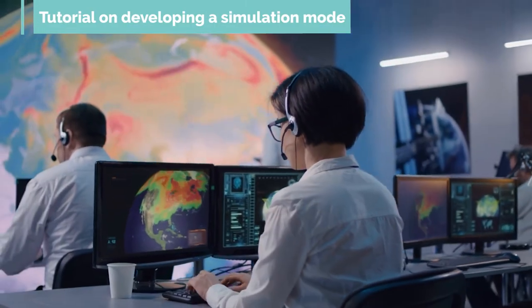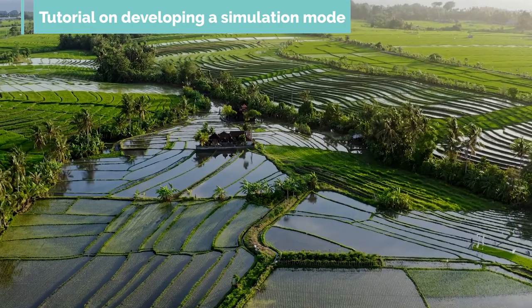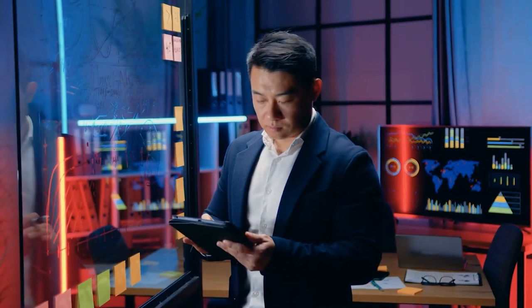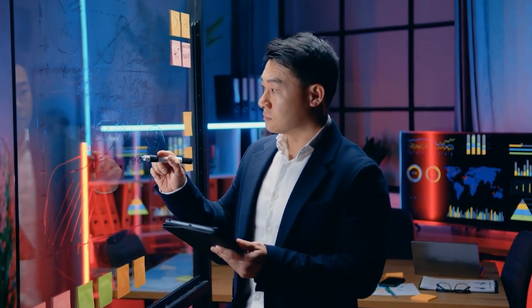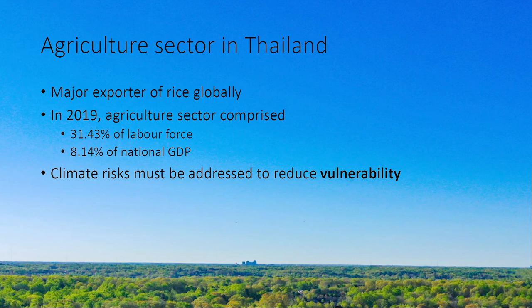As an example, we will develop a simulation model of the potential climate change impact on rice growth in Chiang Mai, Thailand, under the RCP 4.5 and 8.5 warming scenarios. Agriculture, more specifically rice farming, plays a major role in Thailand's national economy. Thailand is a major exporter of rice globally and in 2019 the agricultural sector comprised 31.43% of the national labour force and contributed to 8.14% of the national GDP.